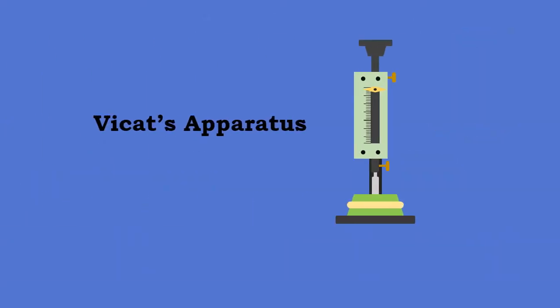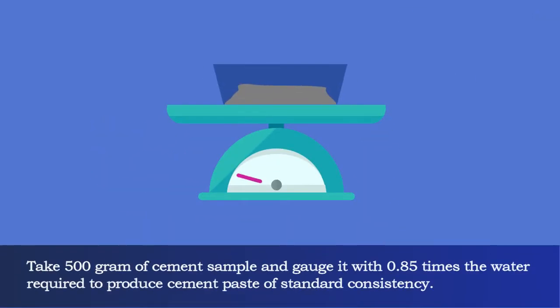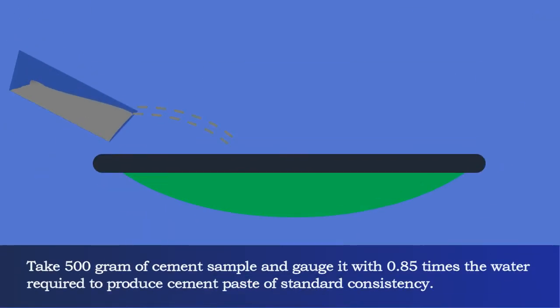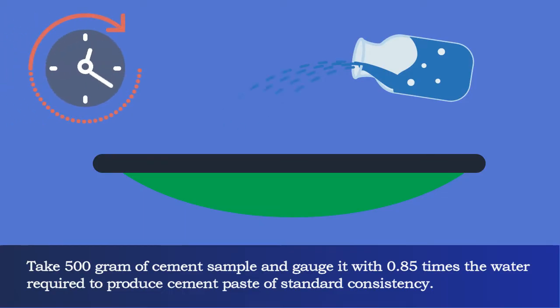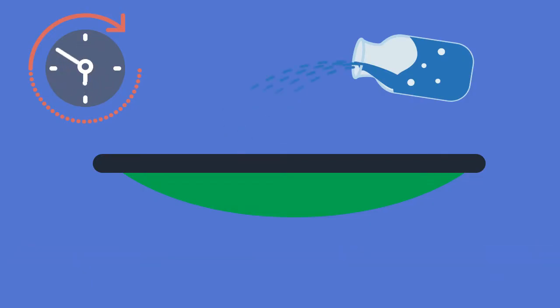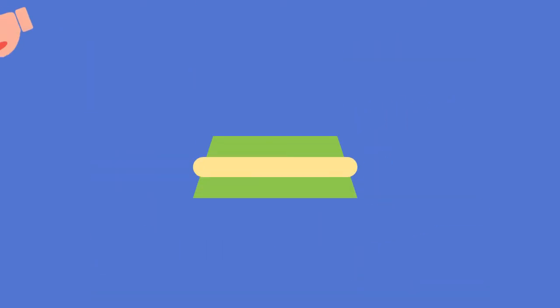The VCAT apparatus used in the consistency test is used for setting time test also. Take 500 grams of cement sample and gauge it with 0.85 times the water required to produce cement paste of standard consistency. Start the stopwatch at the moment water is added to the cement. The paste is prepared in the standard manner and filled into the VCAT mold within 3 to 5 minutes.